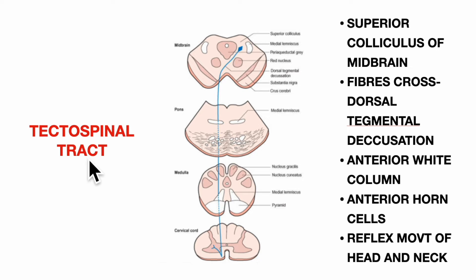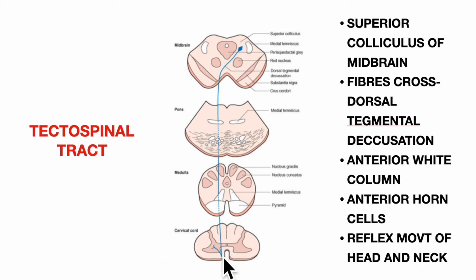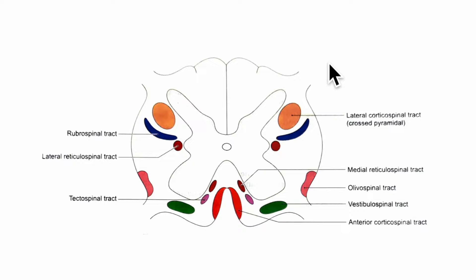Finally, the tectospinal tract is formed by the axons of neurons in the superior colliculus of the midbrain. The fibers cross to the opposite side, forming the dorsal tegmental decussation. The tract descends through the pons, medulla, and anterior white column of the spinal cord. The fibers terminate on anterior horn cells via interneurons. It mediates reflex movements of the head and neck in response to visual stimuli. In this diagram we can see the locations of all the descending tracts in the spinal cord.